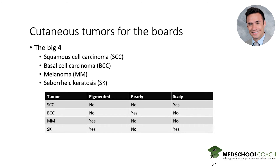Here's a nice way to keep these things distinct in your mind. The big four that will probably show up at some point on Step 1, 2, or 3 — because there's only so much dermatologic knowledge expected of a primary care provider or internist — are squamous cell skin cancer, basal cell skin cancer, malignant melanoma, and seborrheic keratosis, because it's a nice mimic for melanoma. If you organize them into three areas — pigmented, pearly, or scaly — no single lesion overlaps with another in all three facets.